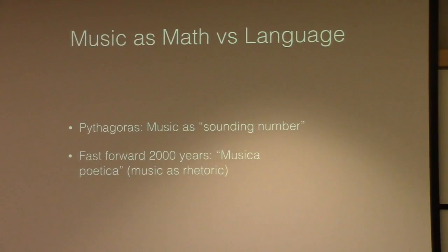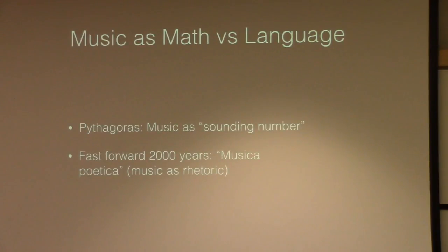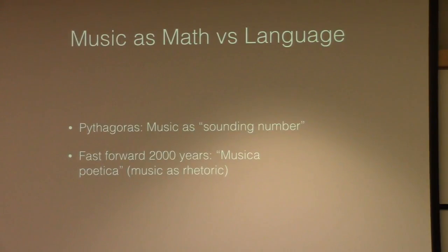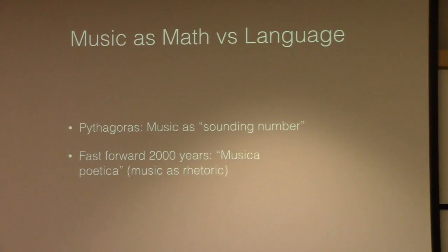In 500 BC, Pythagoras heard some hammersmith striking irons in certain proportions, and noticed that the proportions in size were related to the intervals he heard. This astounded him because it meant music was sounding number — it was math itself. This idea that music is fundamentally mathematical persisted through the Middle Ages, and in the Renaissance and in other cultures such as Indian culture, people started thinking of music as musica poetica — the idea that music is heightened rhetoric, it's meaningful even without a text, something expressive.